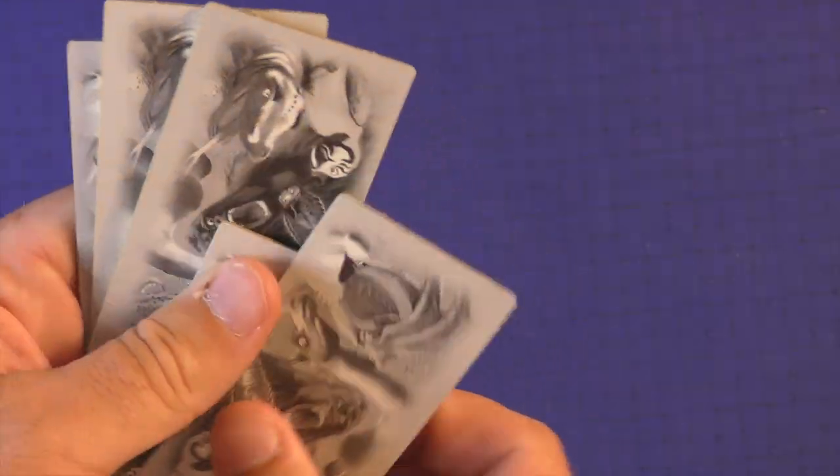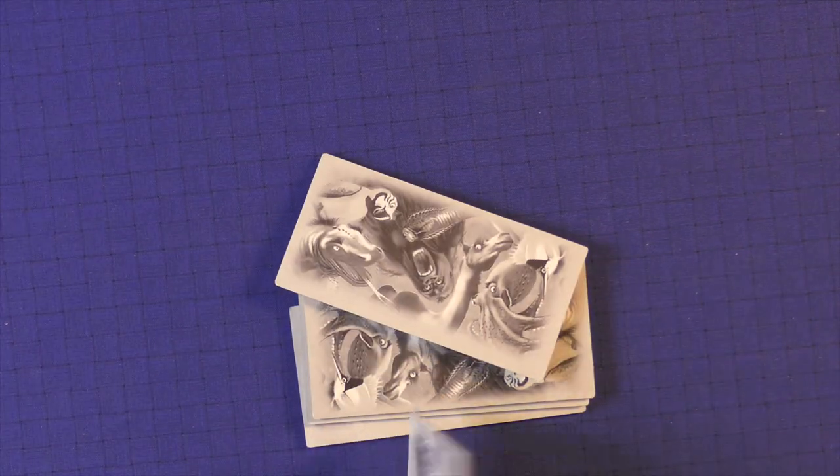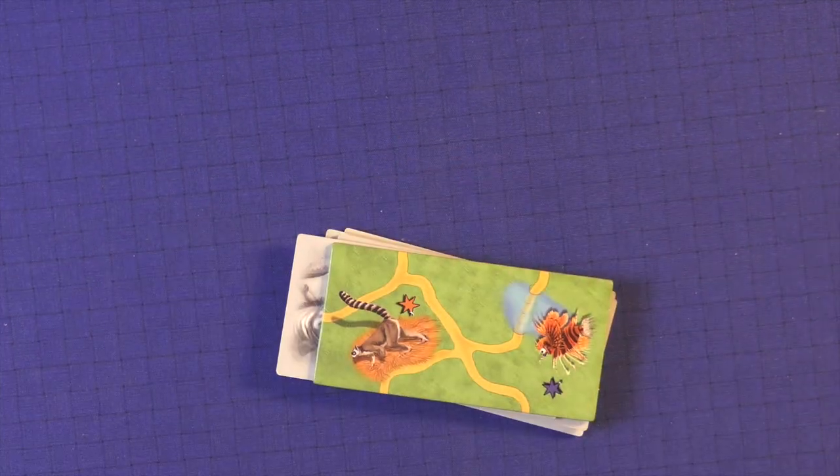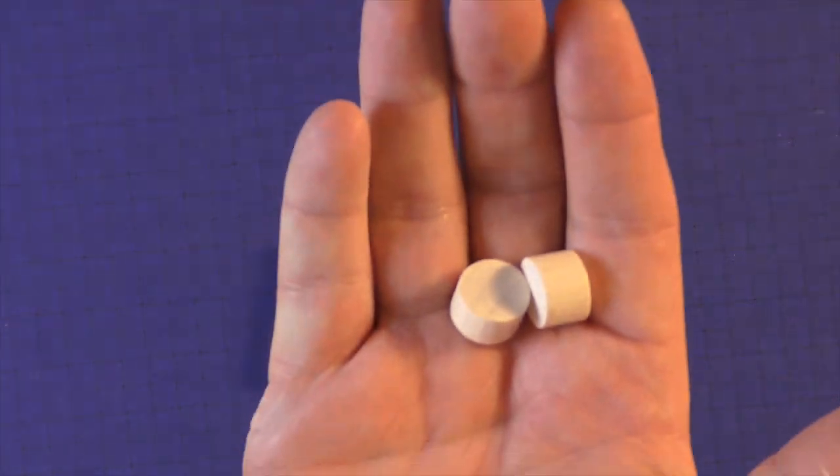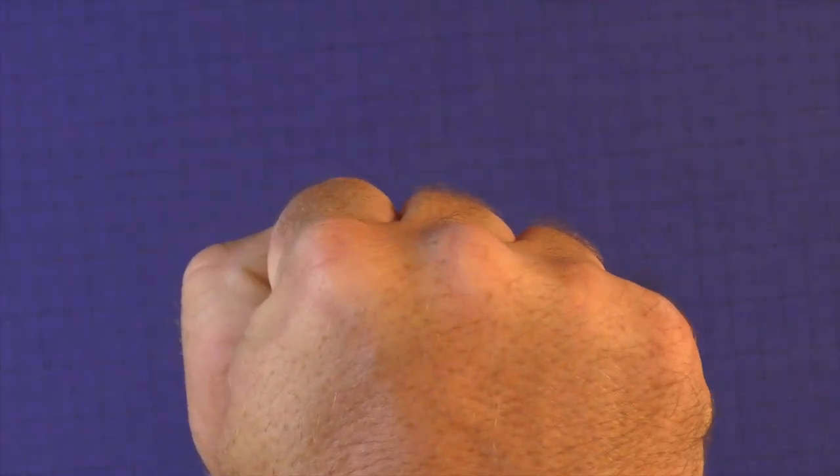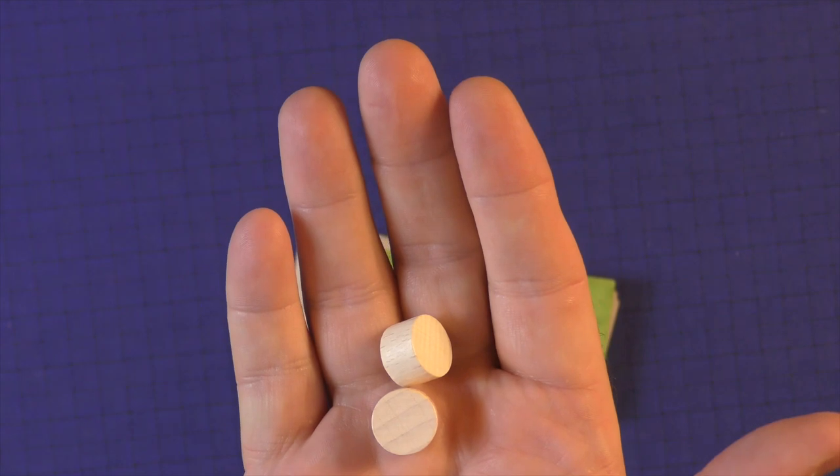Each round, you're going to bid on five tiles. These will be face down. You'll flip one over and you will bid on it. The way bidding is done, people put a number of coins in their hand and they'll put a fist, so it's a secret. Nobody knows what you have, and then you reveal.